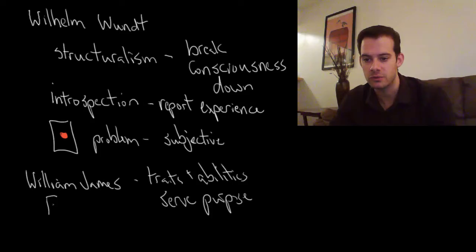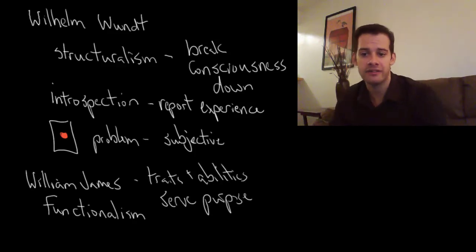And this approach was known as functionalism. So rather than asking, what is it like to see a red circle, a functionalist approach would say, why do we see red? What purpose does color vision serve? How does it help us in some way?